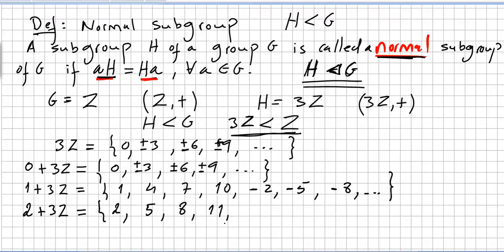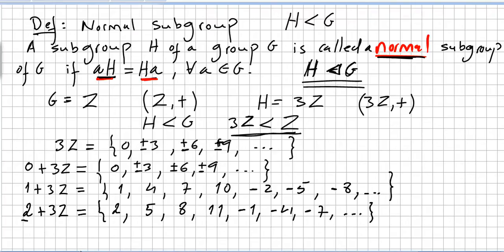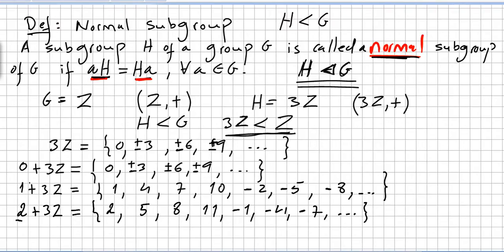Continuing 2 plus 3Z: 2 minus 3 gives minus 1, 2 minus 6 gives minus 4, 2 minus 9 gives minus 7, and so on. So these are the three left cosets of the multiples of 3.